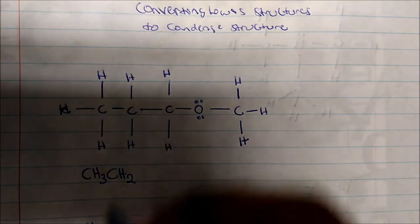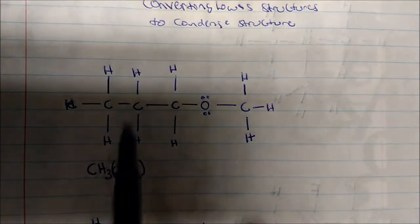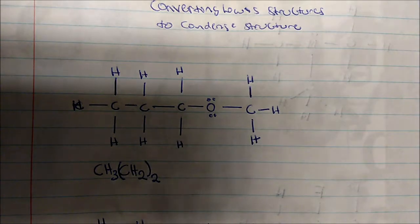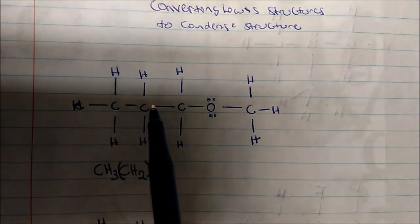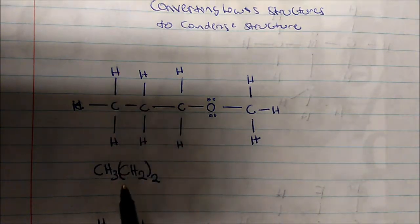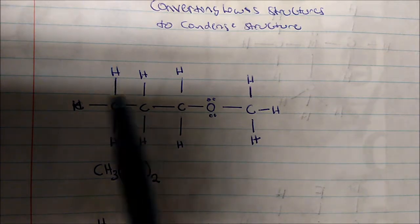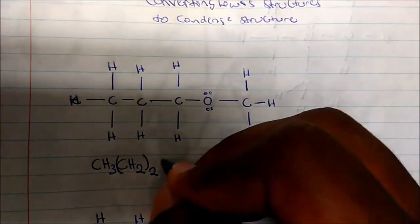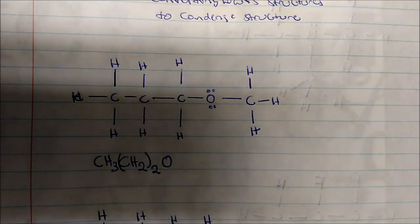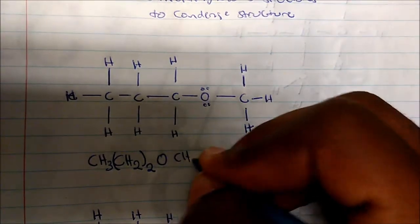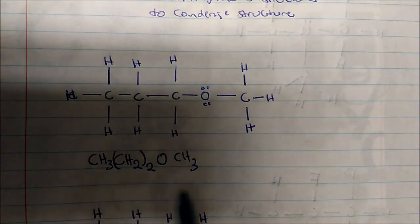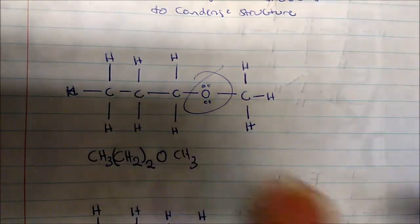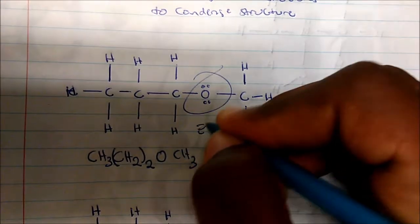I could condense that more and put these in brackets. The general consensus is that if we have more than one of the same group, we put it in brackets and put the amount as a subscript. Since I have two CH2s, I write CH2 in brackets with a subscript 2. Then we have an oxygen, and then another CH3. This functional group — an oxygen sandwiched between two carbons — is called an ether.